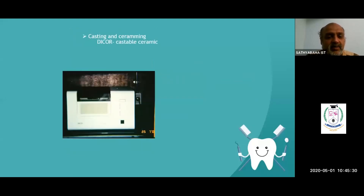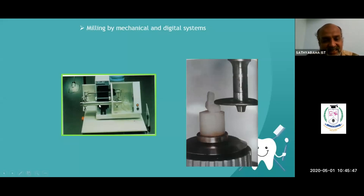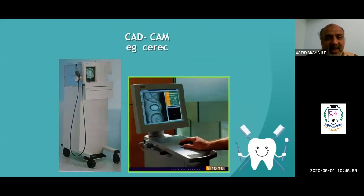This is the Daiko castable type of ceramic — this is the latest technique using CAD/CAM, where computer data is used and milling takes place. Inside this chamber, the ceramic ingot is kept and a bur comes and mills it. On the outside, you scan the impression and the designing of the tooth is done in the computer.